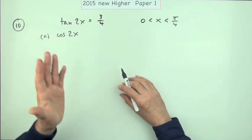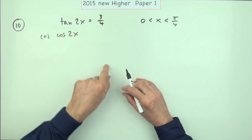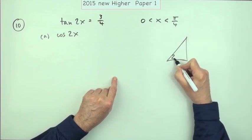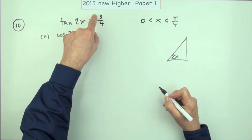The first bit, there's only one mark for it. The mark is just for stating the answer. You'll get that just by reconstructing the 2x triangle, the triangle that had a tangent of three quarters.